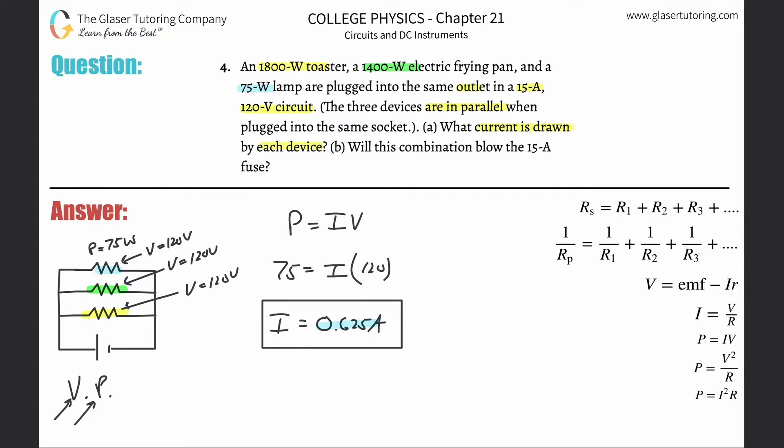That's the current flowing through that. I'm just going to rework this—I realize I'm going to use the same formula three times, which is just the power over the voltage. The power here for the green one is 1400, that's the frying pan, over the voltage of 120. That equals a current of 1400 over 120, which is 11.7 amps.